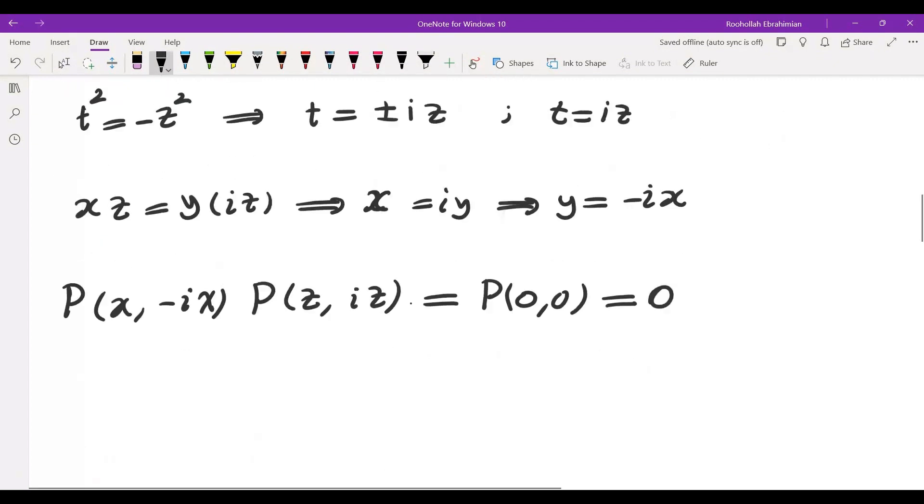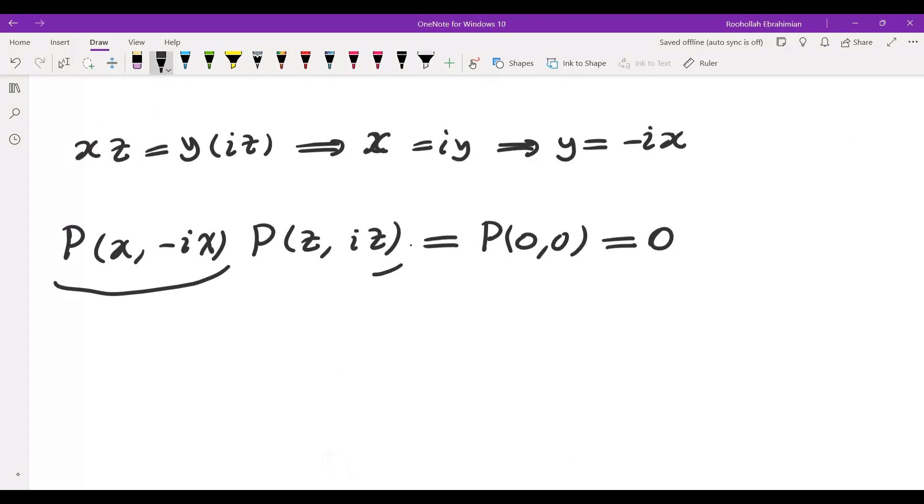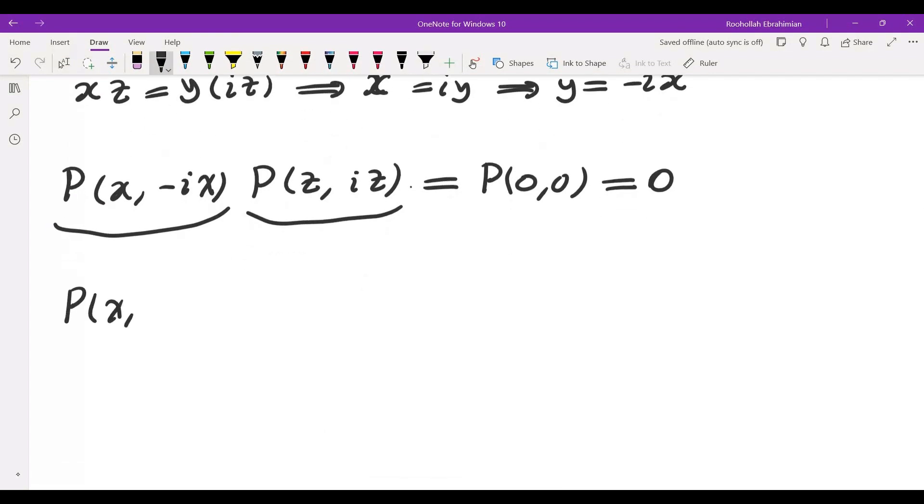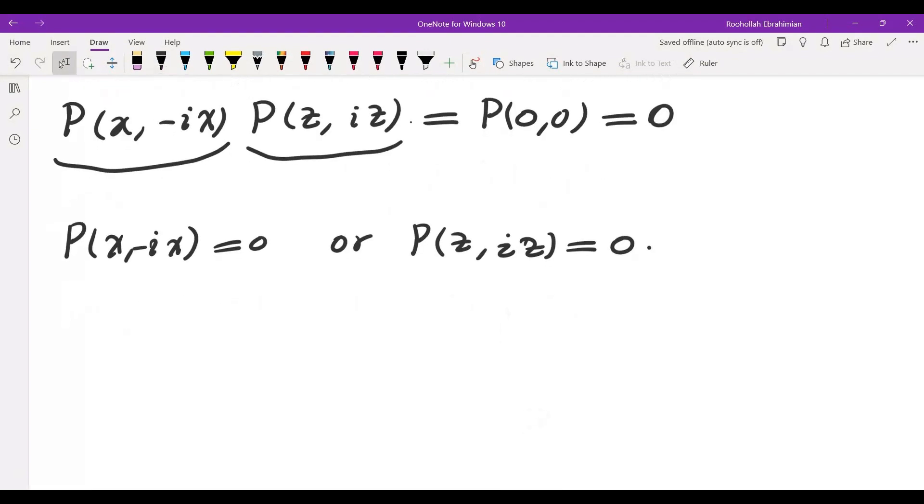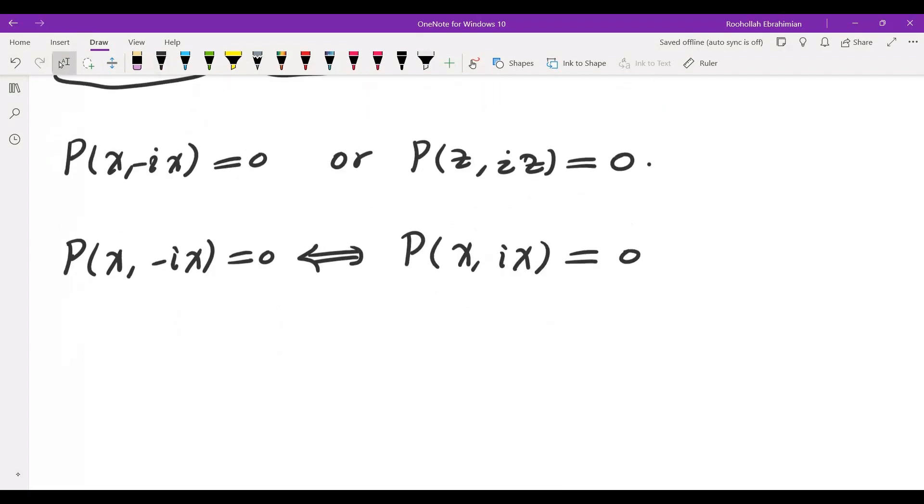I'm assuming that P is not a constant. So what does that mean? It means one of these two polynomials must be 0. Since this is true for every X and Z one of these two polynomials must be 0. So P of X comma negative IX is 0 or P of Z comma IZ is 0. But notice that the coefficients are real. So P of X comma negative IX implies if I take the conjugate of both sides implies P of X comma IX is also 0 and vice versa. So that means both of these must be 0.